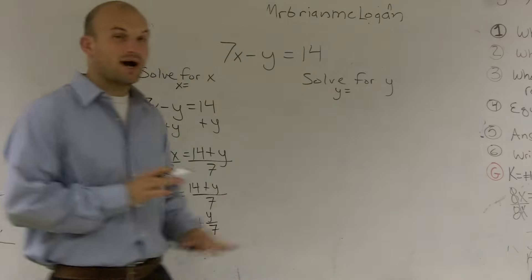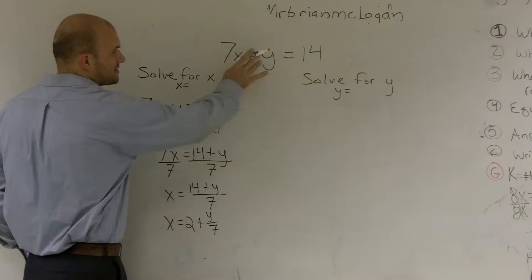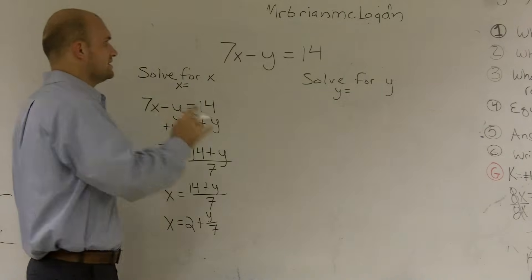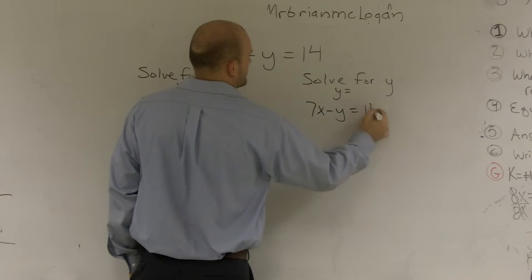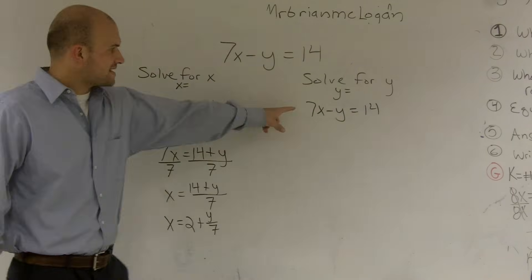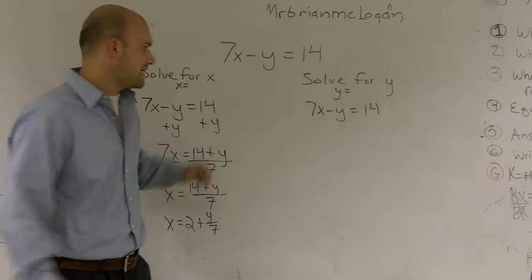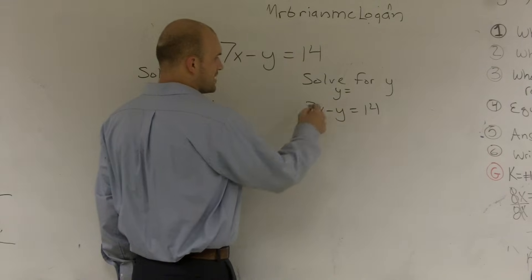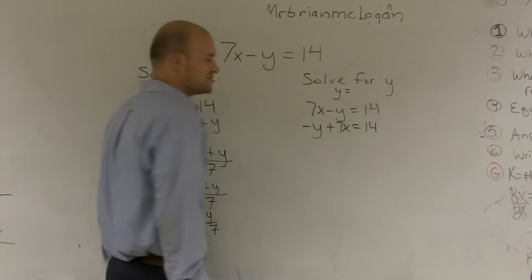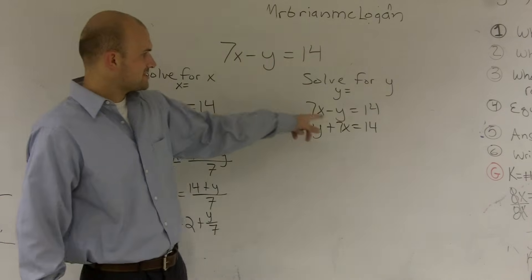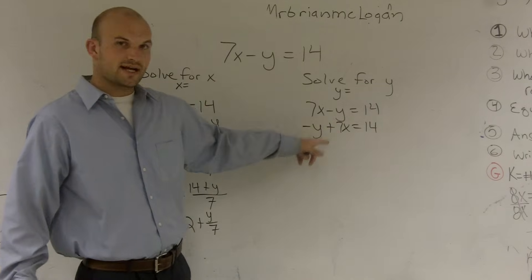Now, when solving for y, it's a little bit more difficult, because a lot of students have trouble seeing this. They don't see that my 7x is being added to my y. So what we might want to do is we might want to rewrite this as y plus 7x equals 14. I didn't change anything. That's still a positive 7x, and that's still a negative y.